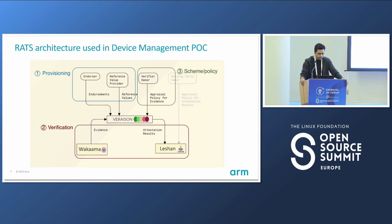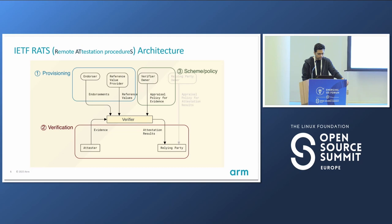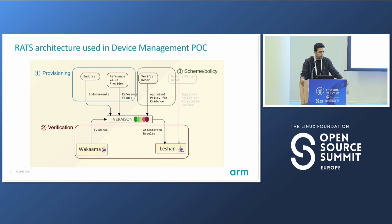This is what we have done in our POC. The verifier, attester, and relying party are now replaced by the components we have actually used, which are Veraison, Wakama, and Leshan. Wakama is running on the device as the attester. Veraison is the service doing the verification, and Leshan is the device management server which provides different services to the attester.